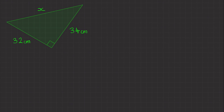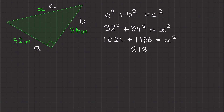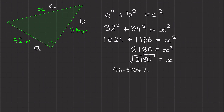For the final green question, we've got a squared plus b squared equals c squared. Labelling the triangle a, b and c — c being the same every single time. Substituting the values: 32 squared plus 34 squared equals x squared. 32 squared is 1024, 34 squared is 1156, and that equals x squared. 1024 plus 1156 is 2180, so 2180 equals x squared. Square rooting both sides: the square root of 2180 equals x, which gives 46.69047 in the calculator. Our final answer is x equals 46.7 centimeters to one decimal place.